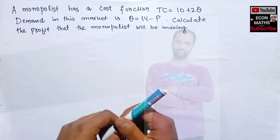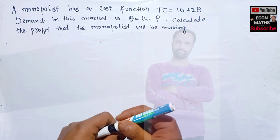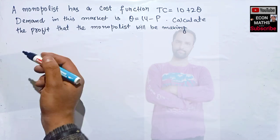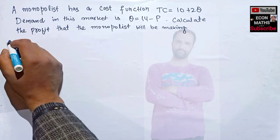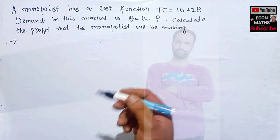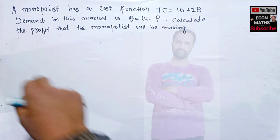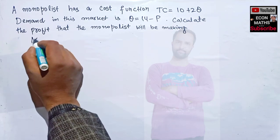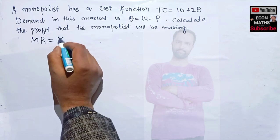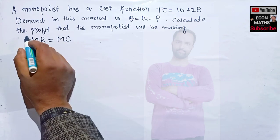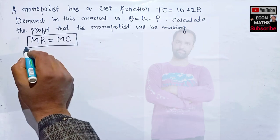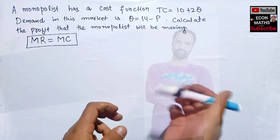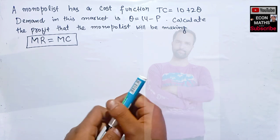To calculate the profit maximization problem in the case of a monopolist, we use the condition we have written most often in our videos: the profit maximization condition, which is that marginal revenue should be equal to marginal cost. We need to equate these two to get the profit-maximizing level of output, and after that we can find out the profit.